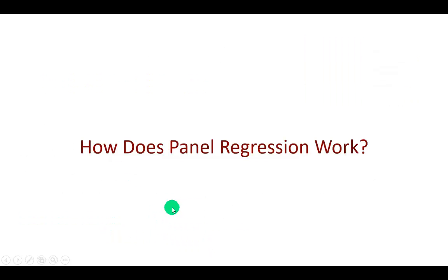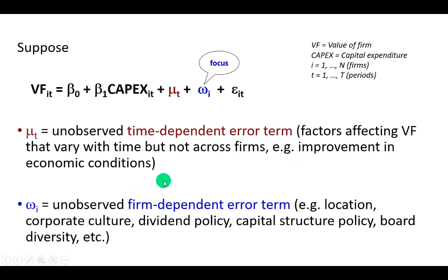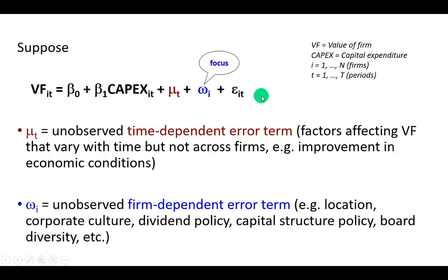So how does panel regression work? Suppose we wish to examine the effects of capital structure and CAPEX on firm value. The three unobserved error terms in this specification are: the time-dependent error term mu_t, the firm-specific error term omega, and the idiosyncratic error term. The focus of this analysis is going to be how to account for the firm-dependent error term omega.